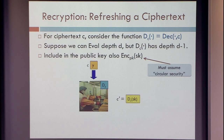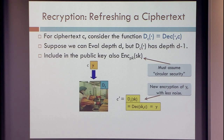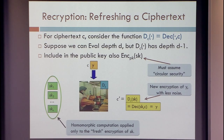The outcome is an encryption of the function applied to our inputs — which is an encryption of what you would get if you decrypt the original ciphertext. So it's an encryption of the original message. Because the depth of evaluating this decryption function is just d minus 1, this has smaller noise than the original ciphertext. We only applied processing to the fresh encryption of the secret key, and now we have one more level that we can evaluate on this ciphertext — and then we can repeat the process.